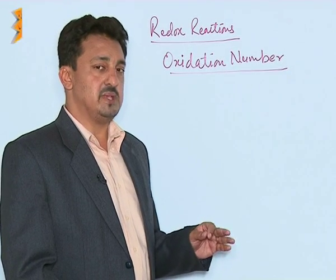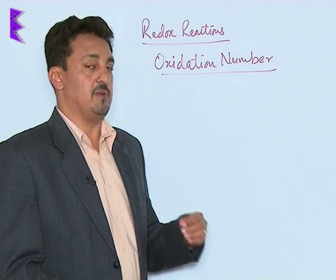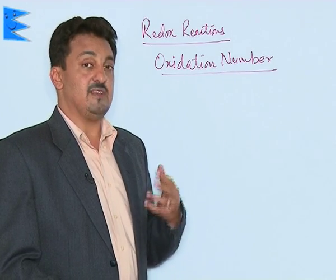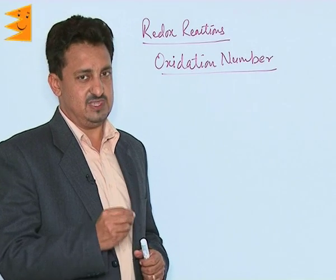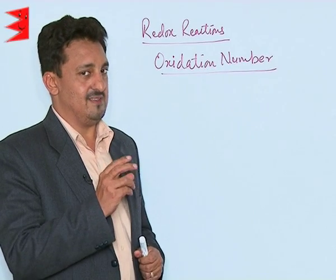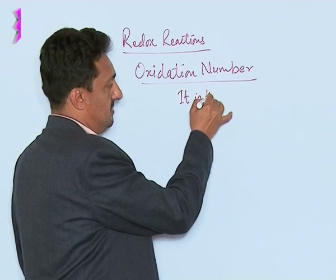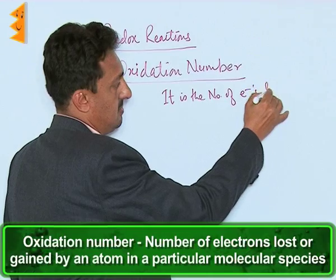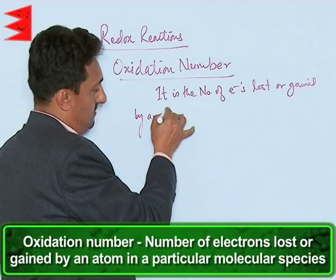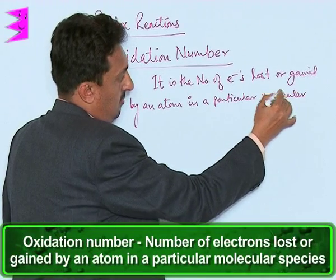The term 'oxidation number' is very useful in order to understand which species is undergoing oxidation or which species is undergoing reduction in any particular redox reaction. This is a very advanced term which gives us an idea about the oxidation state of an atom in any particular species. We define oxidation number as the number of electrons lost or gained by an atom in a particular molecular species.